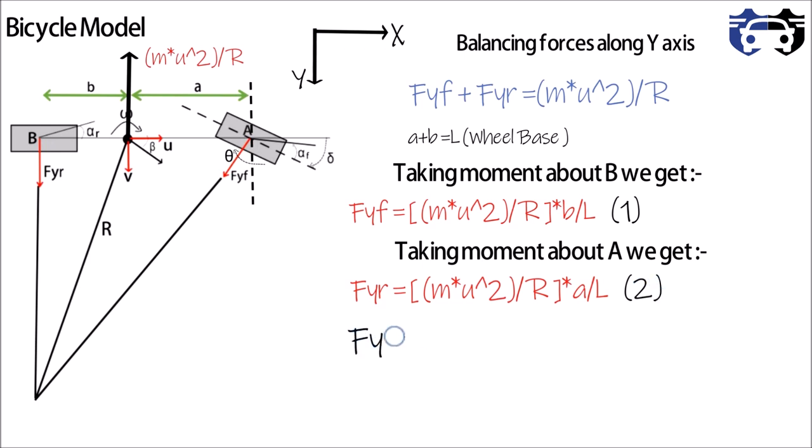Lateral force on the tire is given by Fy = C_alpha * alpha, where C_alpha is the cornering stiffness and alpha is the slip angle. For the front tire we can write Fyf = C_alpha_f * alpha_f. This is our equation 3.